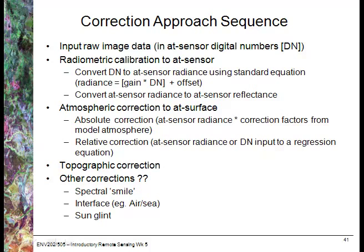We have the option of doing absolute or relative atmospheric correction, which I'll look at in a moment. The next step would be topographic correction and any other corrections needed, such as spectral smile — the variation in radiance across an image where it's typically brighter at the edges — as well as air-sea interface corrections and sun glint.